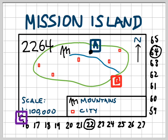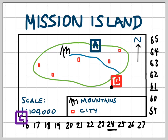Now you have a go and see if you can figure out what the area reference for B is. So the area reference for B: bottom left-hand corner, go along the corridor to 24, up the stairs to 61. So the area reference for B is 2461.